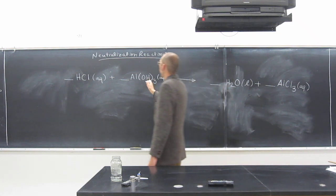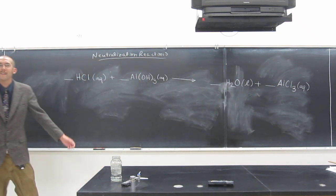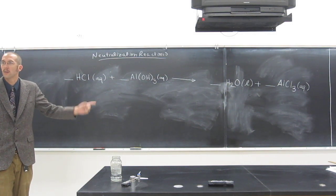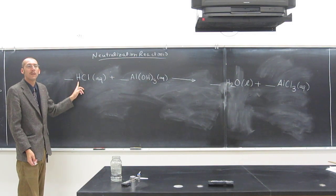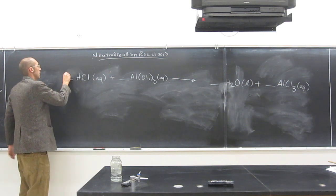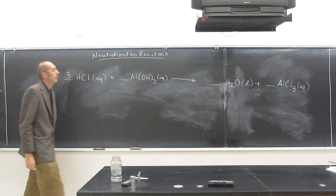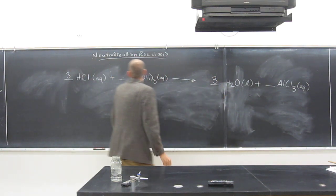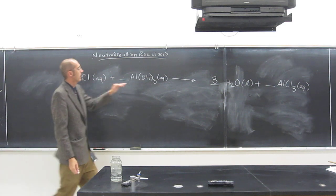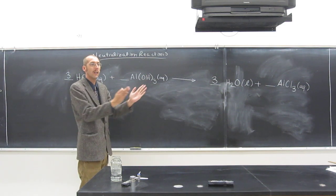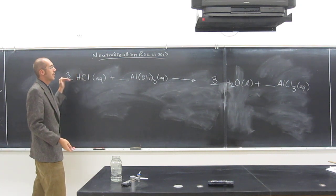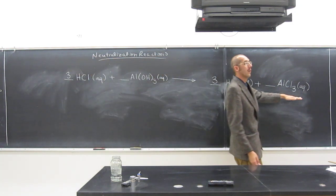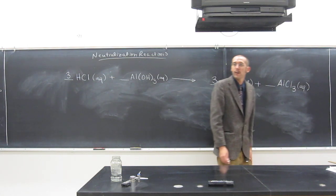So we've got three hydroxides here. They're going to have to have three protons to react with to make three water molecules. This is the only thing that's got protons on it. So put a 3 there and a 3 here, and now we've got 3 H's, 3 OH's, that's going to make 3 waters. So we've got 3 Cl's and 1 Al, that's going to make 1 AlCl3. Is that okay with everybody?